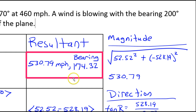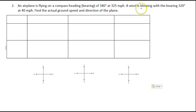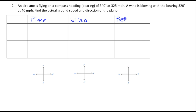Now I'm going to do another example. Please pause the video and try this problem by yourself first. An airplane is flying at a compass heading or bearing of 340 degrees at 325 miles per hour. A wind is blowing with a bearing of 320 degrees at 40 miles per hour. Find the actual ground speed and direction of the plane.